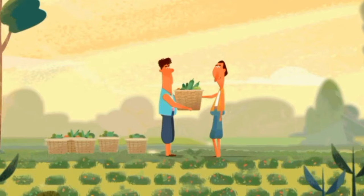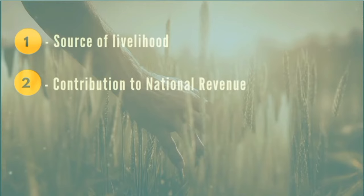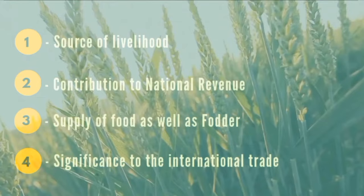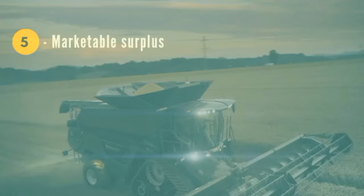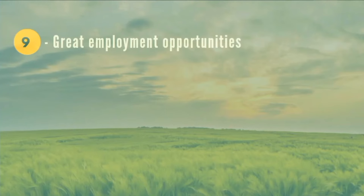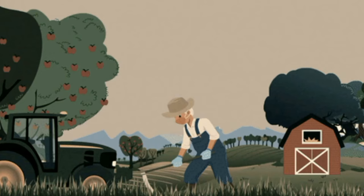Agriculture also reduces poverty by providing both a source of food and employment. In addition to providing food and raw materials, agriculture also provides employment opportunities to a very large percentage of the population. Key factors why agriculture is important include: source of livelihood, contribution to national revenue, supply of food and fodder, significance to international trade, marketable surplus, source of raw materials, foreign exchange resources, great employment opportunities, economic development, source of saving, and food security.